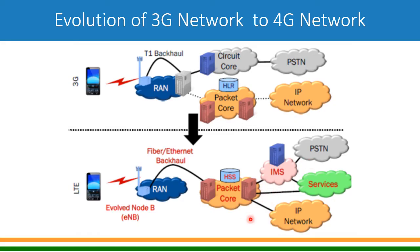The packet core also connects to the IP network or any services it offers. Another change is the backhaul: from RAN to RNC it was typically a T1 backhaul, but in 4G, because it has to handle more data compared to 3G, it will be a fiber or Ethernet kind of backhaul to the core.